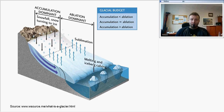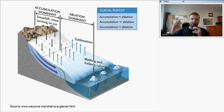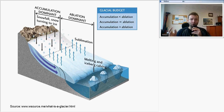In the upper part of a glacier, accumulation is dominant. In the lower part of the glacier, ablation is dominant. For the full mass budget: if ablation is higher than accumulation, the glacier has a negative mass balance and will shrink. If accumulation is higher than ablation, that means a positive mass balance, so the glacier can grow.